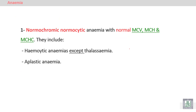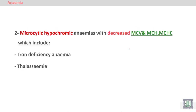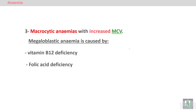Normocytic normochromic anemia is defined as anemia with normal MCV, MCH, and MCHC. It includes hemolytic anemia (except thalassemia) and aplastic anemia, both of which will be discussed in detail later. Microcytic hypochromic anemia has decreased MCV, MCH, and MCHC, and includes iron deficiency anemia — the most common and important type — and thalassemia, a hereditary disease associated with consanguineous marriage, to be discussed in detail later.